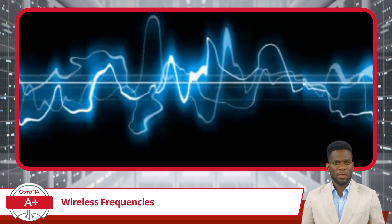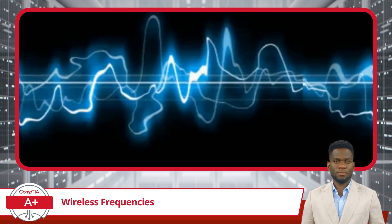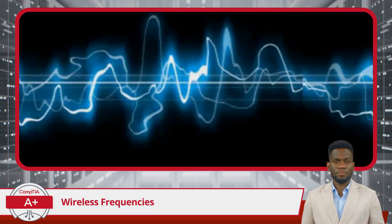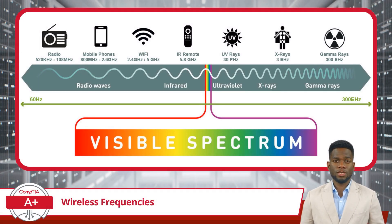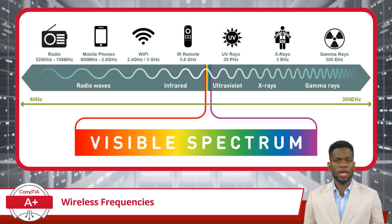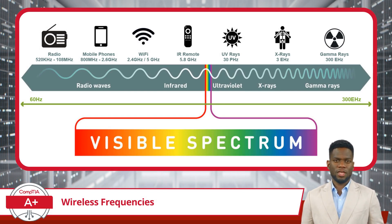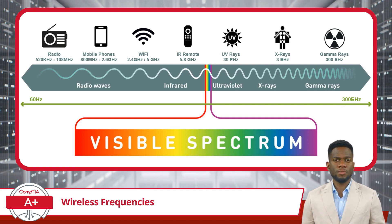If a wave moves up and down quickly, it has a high frequency. But if it moves up and down slowly, it has a low frequency. Signal frequencies are usually measured in hertz, which represents the number of cycles per second. The electromagnetic spectrum chart shows the entire range of electromagnetic frequencies.